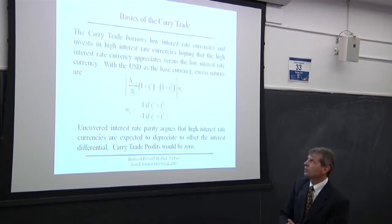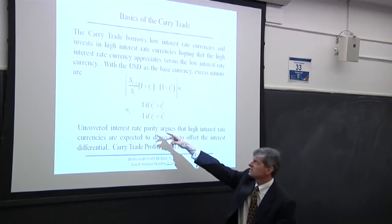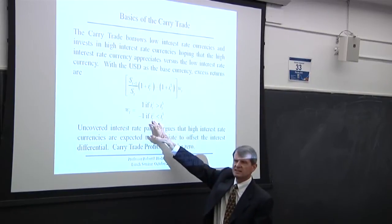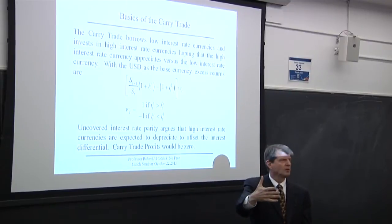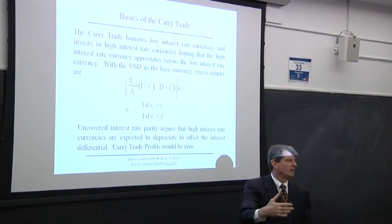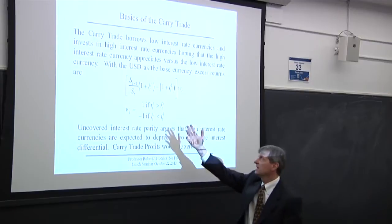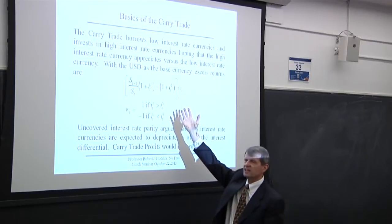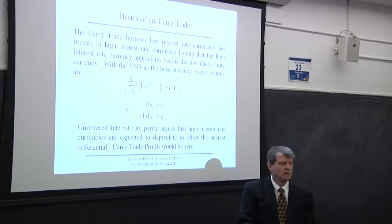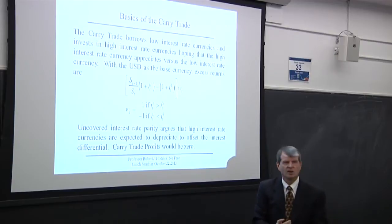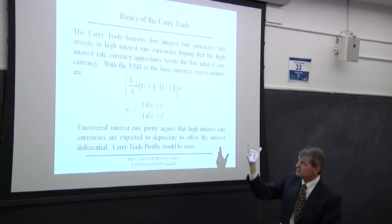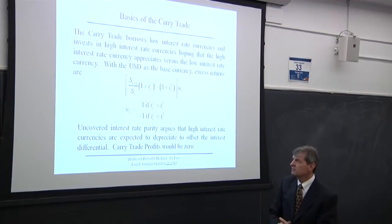If the interest rate in currency J is higher than the dollar rate, you get what's called the carry part of the trade. You're also hoping for currency appreciation of J — you want S-T-plus-one to be higher than S-T, meaning the dollar weakens and currency J strengthens. You can afford a little weakening of currency J because you're getting higher interest. If you're short the foreign currency — when its interest rate is less than the dollar rate — you first borrow currency J and invest the dollar, then owe the interest plus principal on your borrowing.